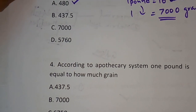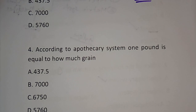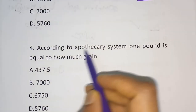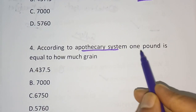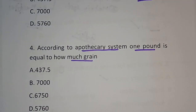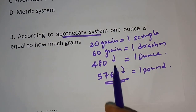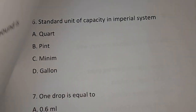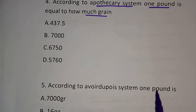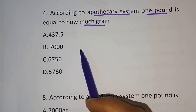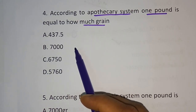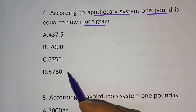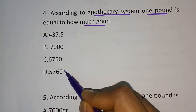Question number 4: According to the apothecary system, 1 pound is equal to how many grains? We already studied this — in the apothecary system 1 pound is equal to 5,760 grains. The options are 437.5, 7000, 6760, and 5760. The correct answer is option D — 5,760.